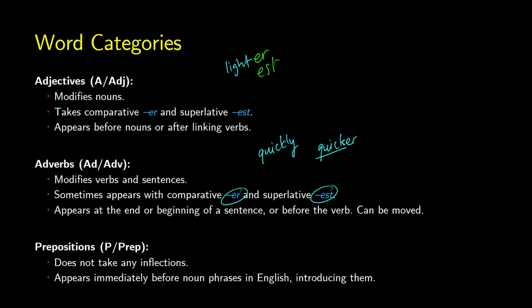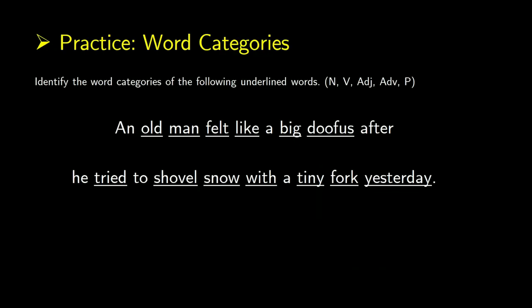Prepositions are a special case — they don't take any inflections in English and they always introduce noun phrases. Whenever you have a preposition, you're going to have a noun phrase that follows it: 'in the window', 'on the box', 'near the cafeteria'. This is a quick review of those lexical word categories. For practice, you can pause the video and try labeling each underlined word as noun, verb, adjective, adverb, or preposition.